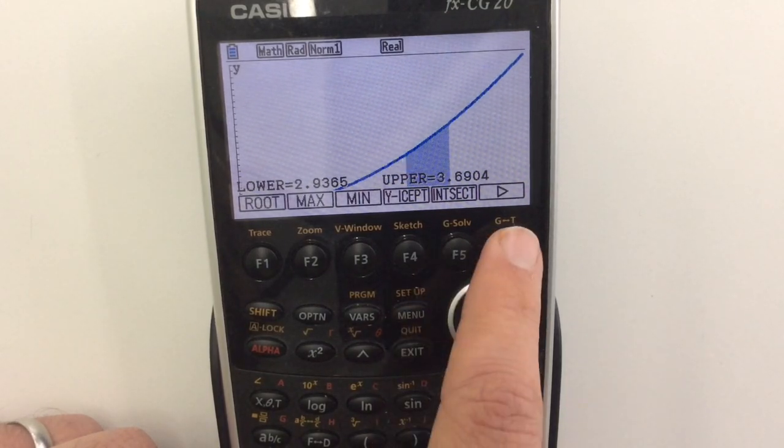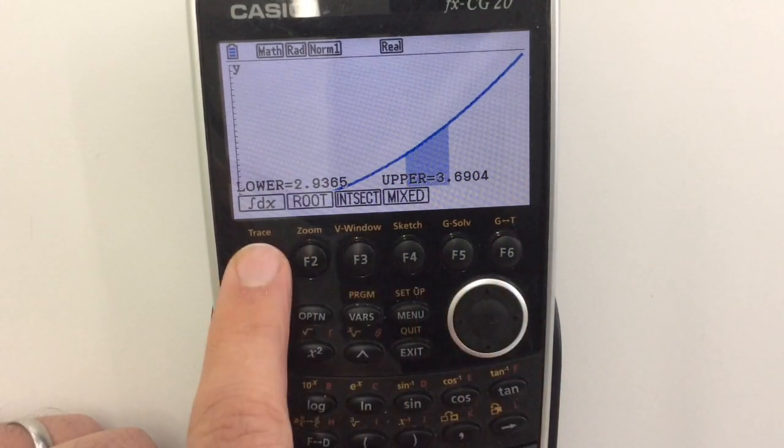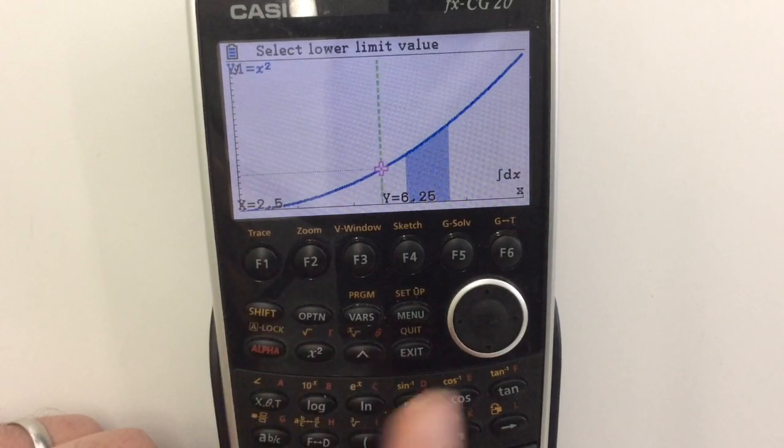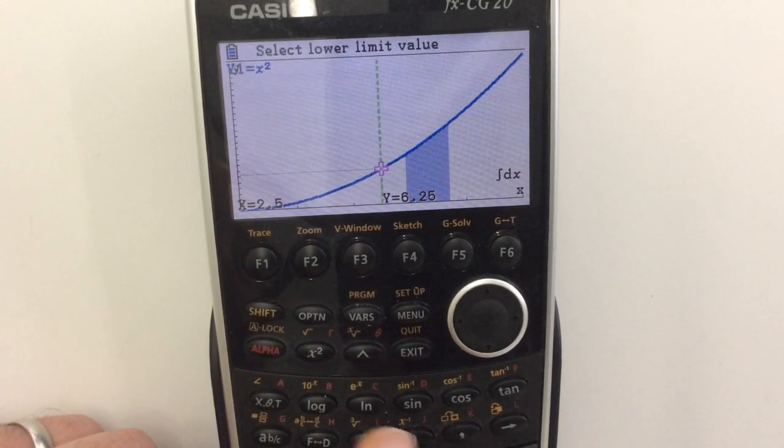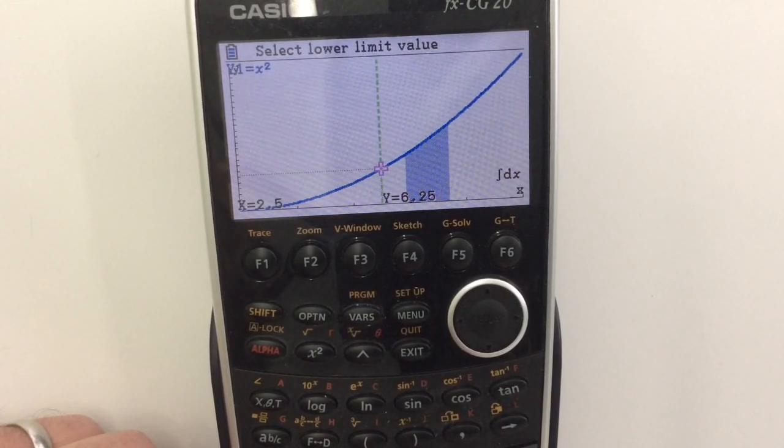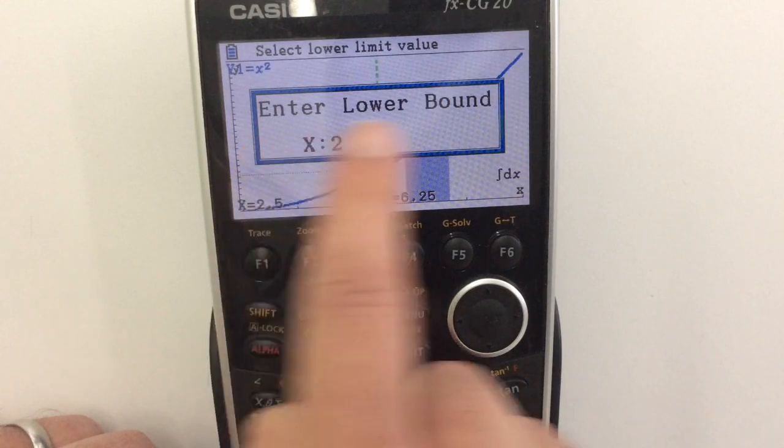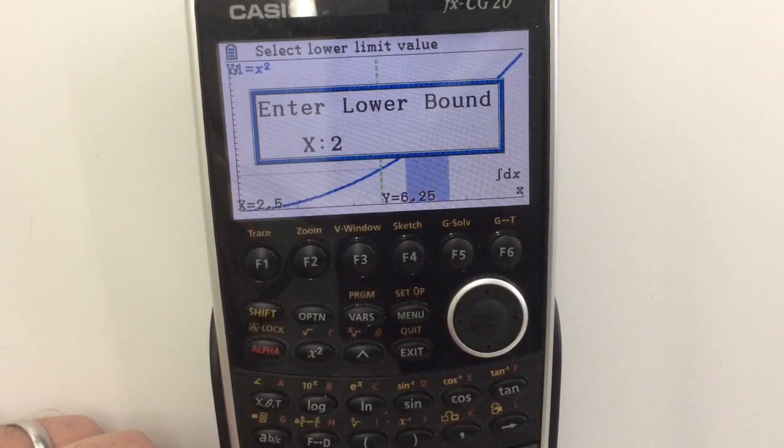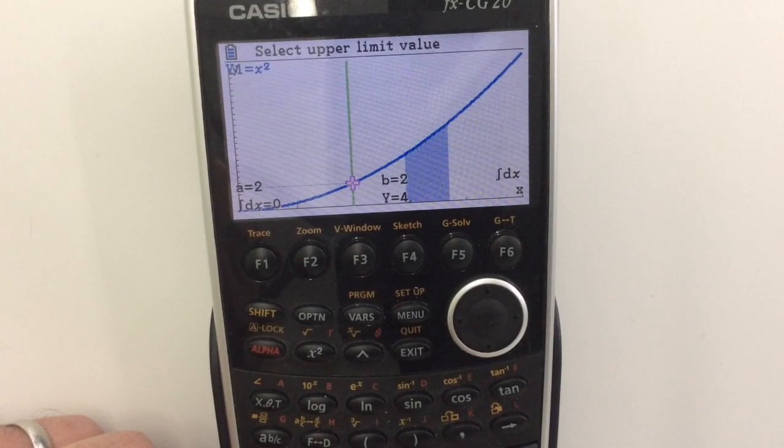But we probably want to be more accurate than that. So let's go across, go back into there again. Now we'll say okay I want to integrate between let's say 2 and 4. All I'm going to do is type in the number 2. And it comes up with enter lower bound x equals 2. Obviously we can change that to anything we want to. Press execute. And now I'm going to press 4.